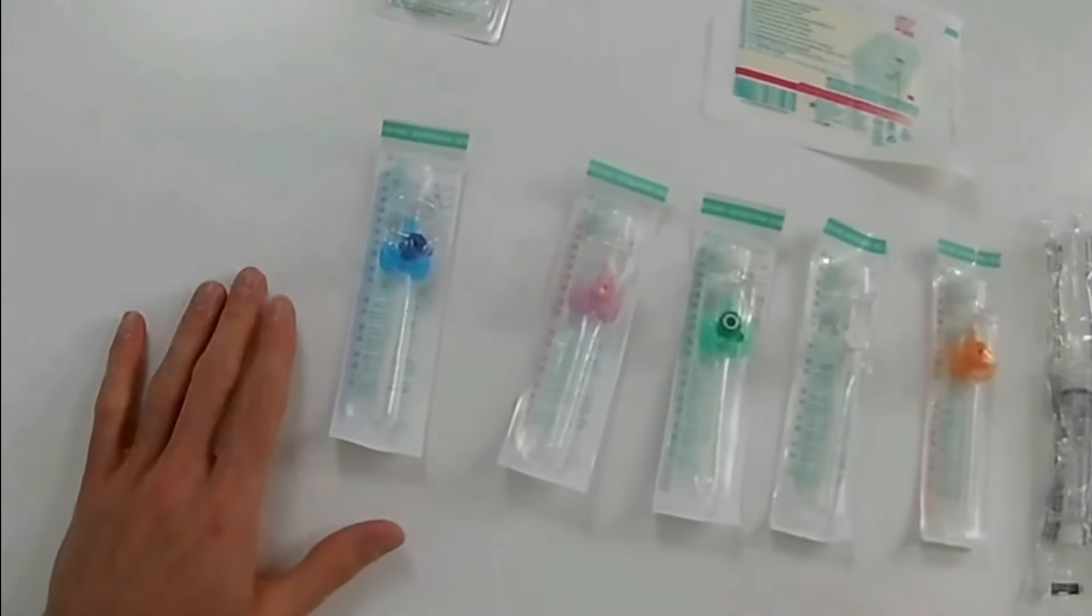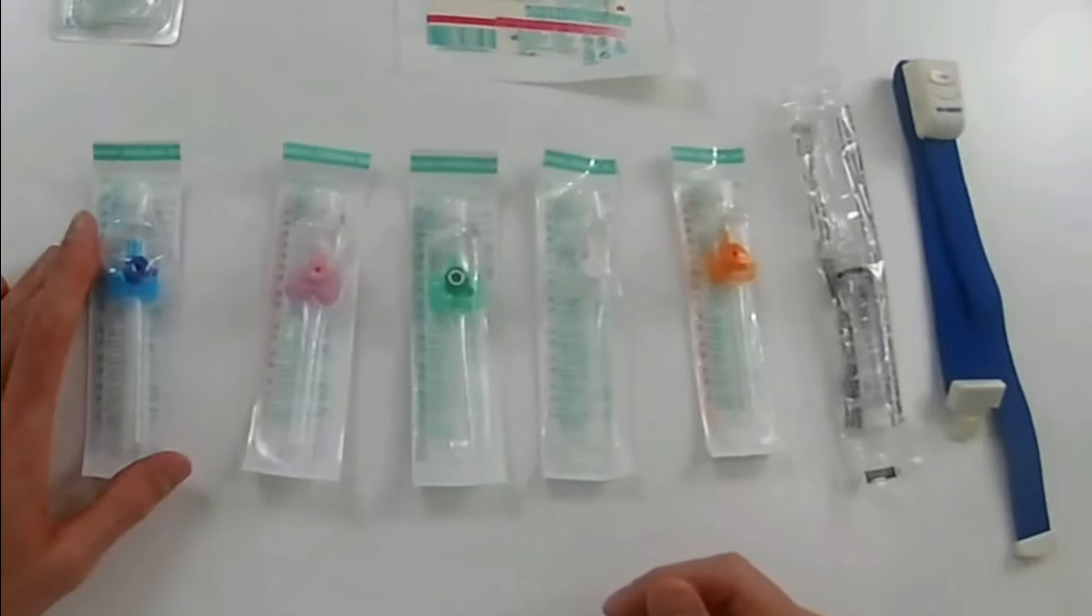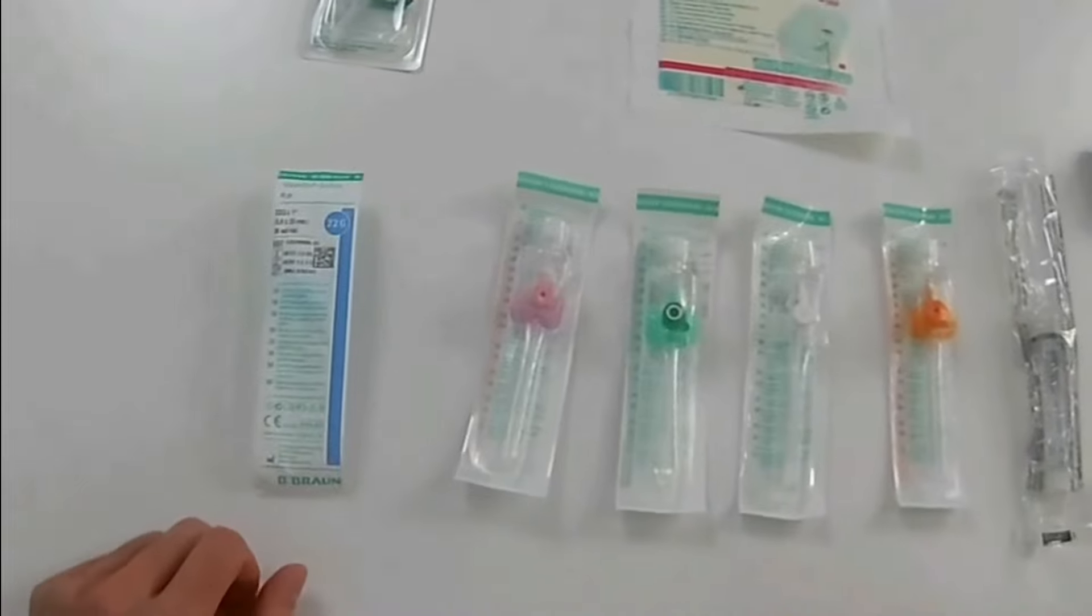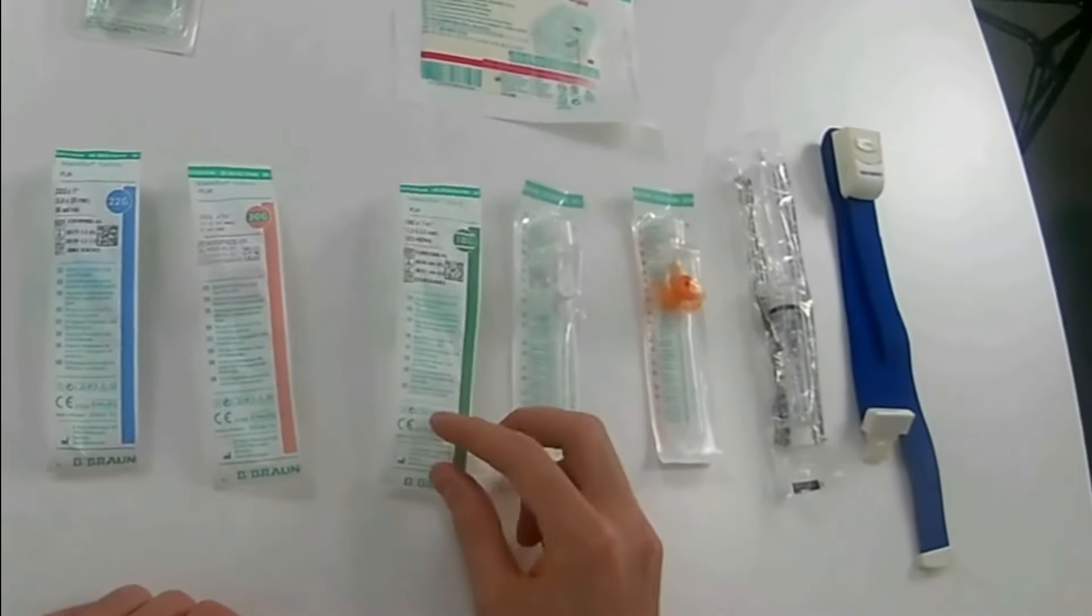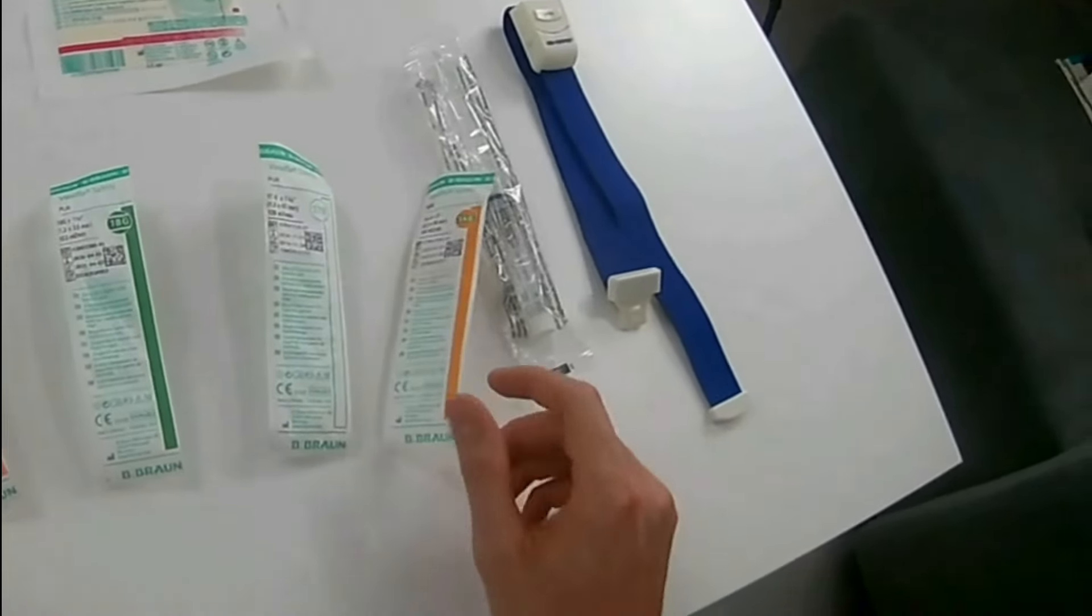The ones we have normally for adult patients and children in general is starting from the blue and becoming bigger. So you have the 22G, which is the blue one, then the pink one 20G, green 18G, white is 17G, and the orange is 14G.